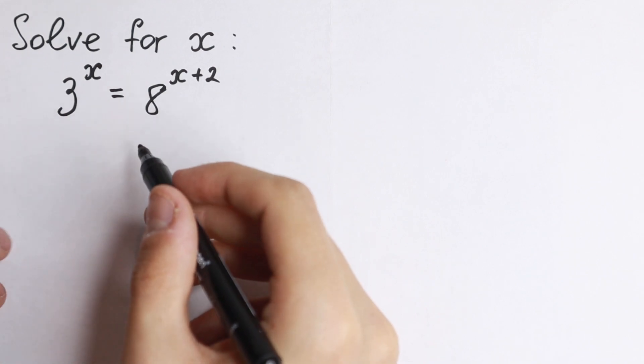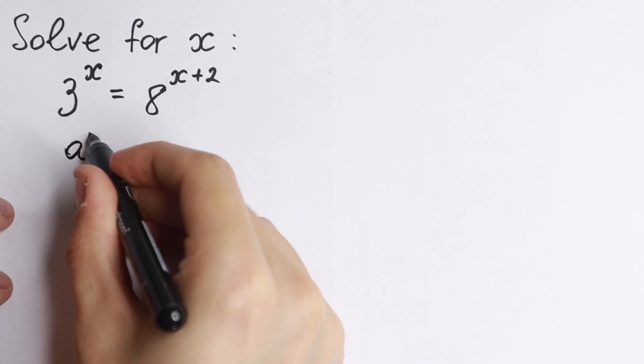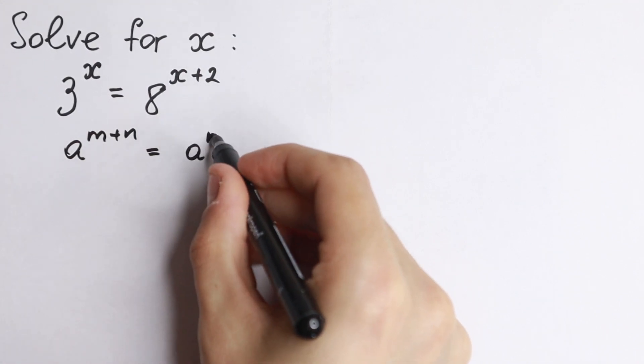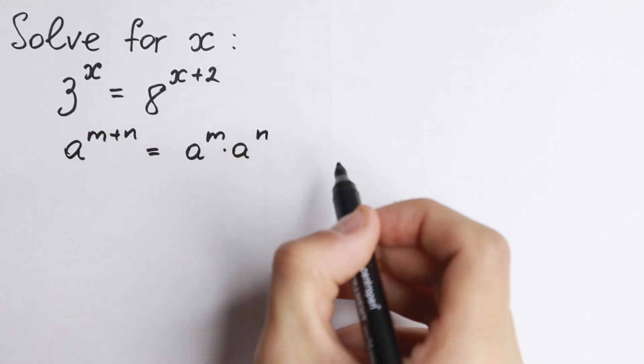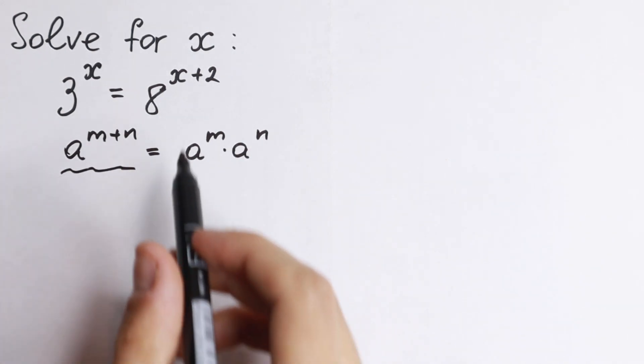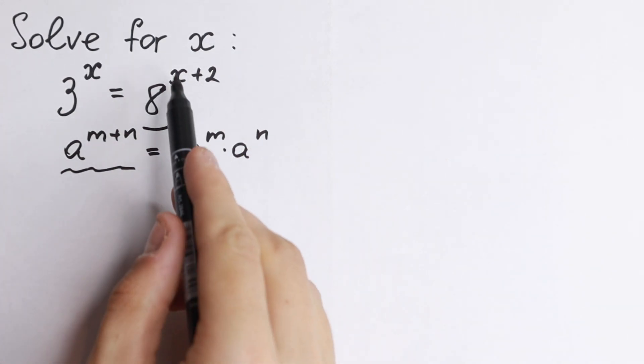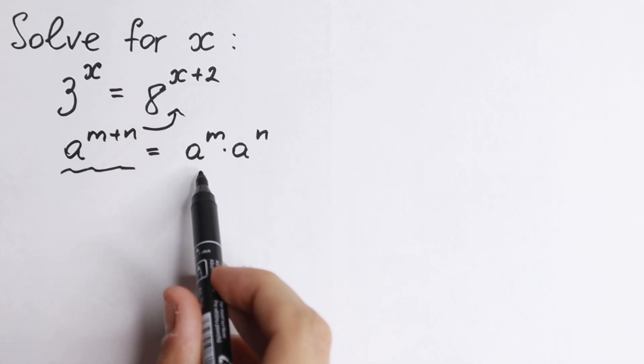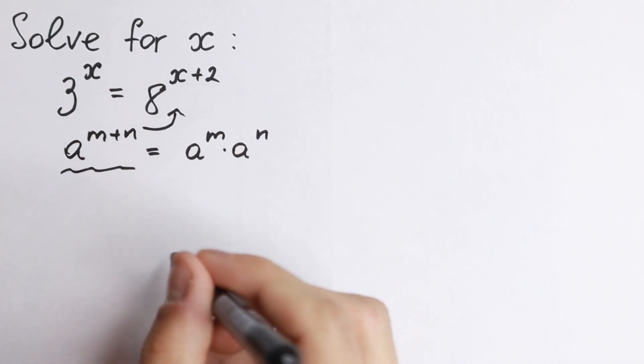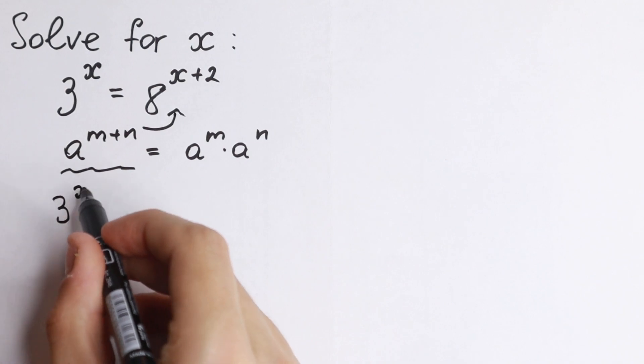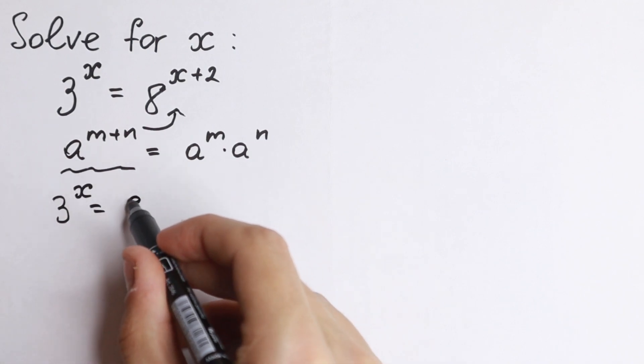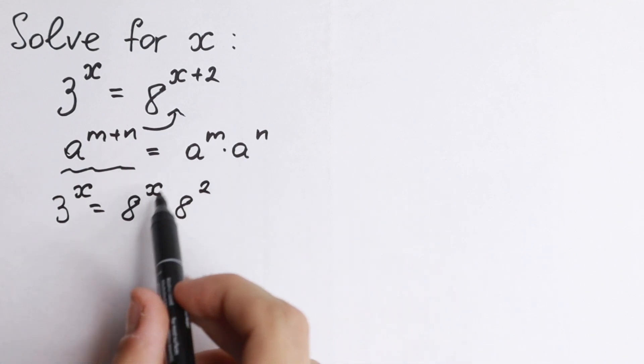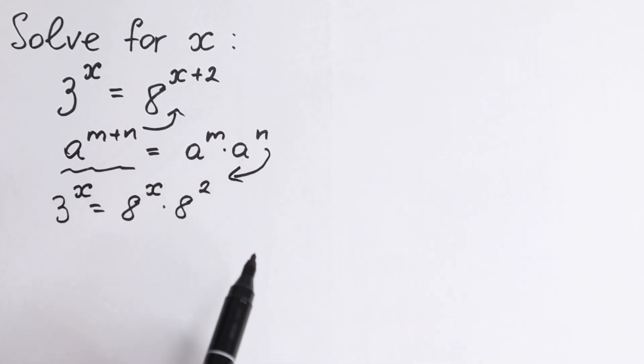First of all, we need to know a really good rule. If we have a^(m+n), it would be equal to a^m times a^n. So we use this rule right here. We have a sum in our power and we can easily write it as 8^x times 8^2. So we will have 3^x = 8^x times 8^2.